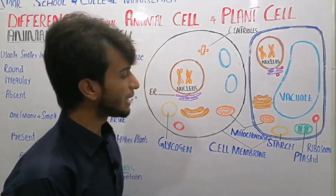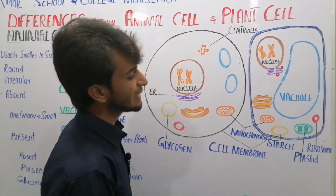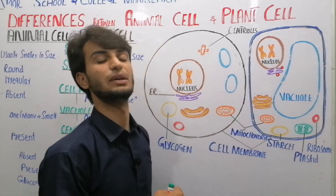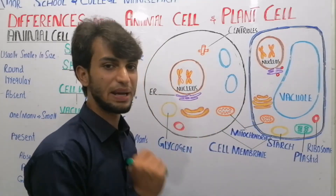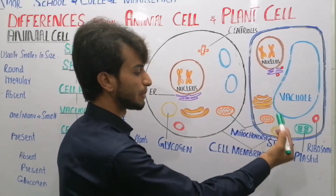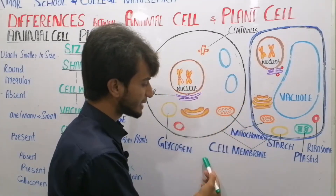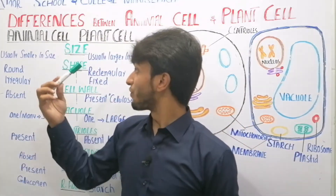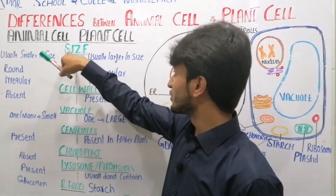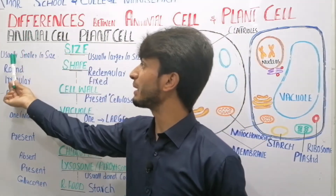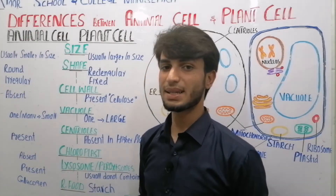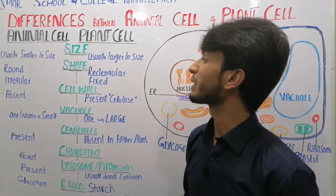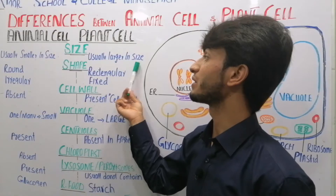Let's start. If we look at plant cells, the size of plant cells is larger than animal cells. That is the first difference — size. Plant cell ka size larger hai, animal cell ka size smaller hai as compared to plant cell. So the first difference is size: animal cells are usually smaller in size compared to plant cells.